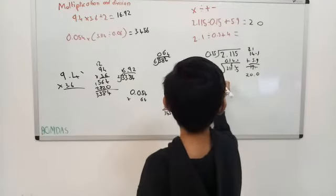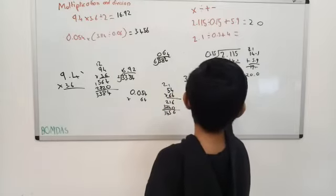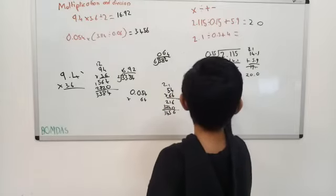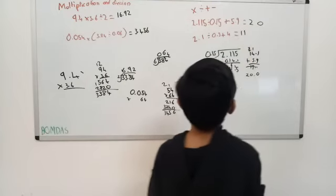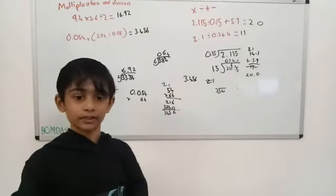So that's the answer here. And now let's go to this one: 2.1 divided by 0.3, so 21 divided by 3. The answer to that is 7. 7 plus 4 is 11. So that's the answer here. Thank you for listening to this video.